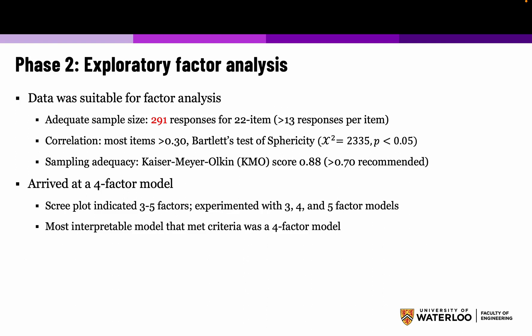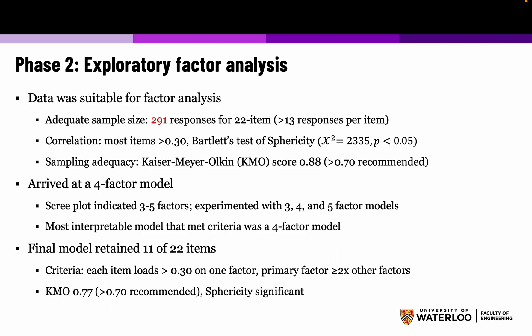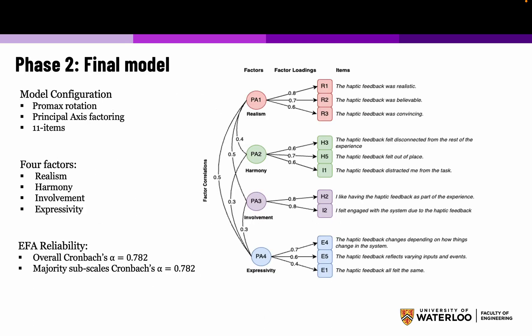We arrived at a four-factor model. Our scree plot indicated somewhere between three and five factors, so we iteratively tried several models. The most interpretable model that met our criteria was the final model. This final model ended up having only 11 of the 22 items after item reduction. The four factors were: realism, harmony, involvement, and expressivity, each with two or three items.